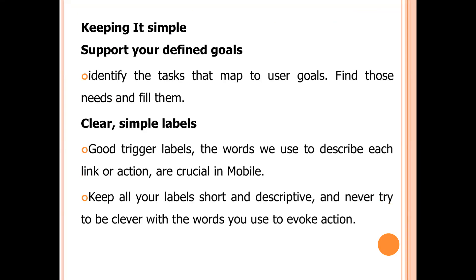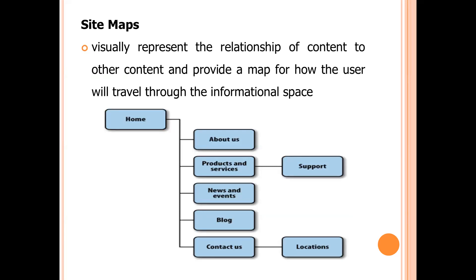The first characteristic is keeping it simple. You have to use clear, simple labels so that by reading the label, the user can easily understand what function it is going to perform. The second characteristic is the site map, which is visually representing the relationship between the content. For example, from the home page you have different tabs like About Us, Products and Services, News and Events, Blog, and Contact Us — that is a sample site map.